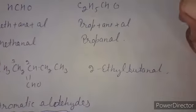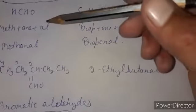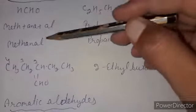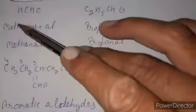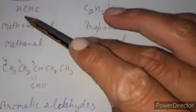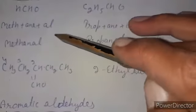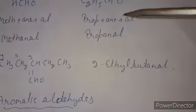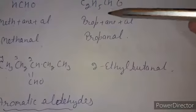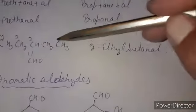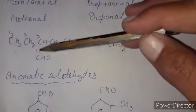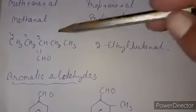Now we discuss the IUPAC system for naming aldehydes and ketones. For aldehydes, we use the suffix '-al', and for ketones the suffix '-one'. For aldehyde: one carbon is 'meth' plus 'an' plus 'al' — methanal. Similarly with three carbons: 'prop' plus 'an' plus 'al' — propanal.